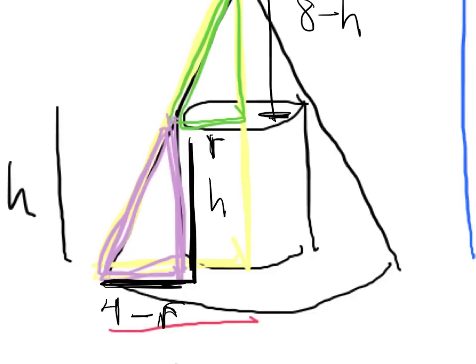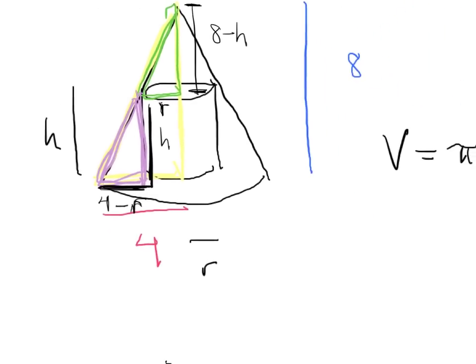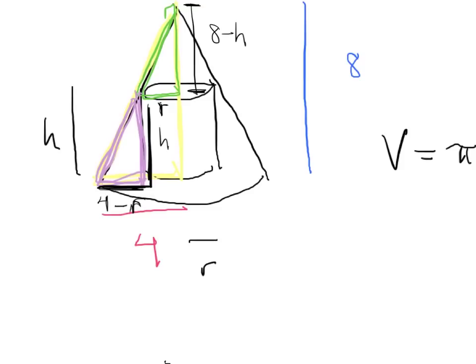Now the question is, what do we know about the big triangle? Well, the easiest way to phrase what we know is in terms of slope. The slope of this line is 8 over 4. So the easiest thing to use actually then is going to be h over 4 minus r equals 2.